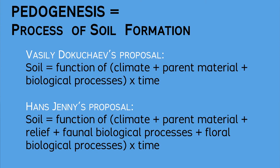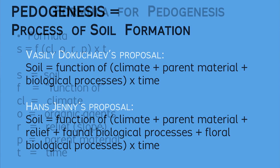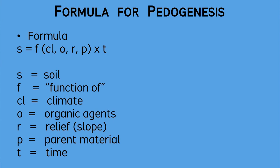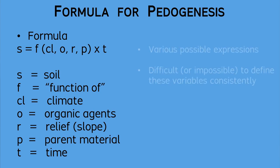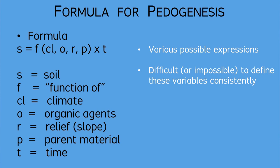Hans Jenny modified and expanded the pedogenesis formula. He added relief or slope of the terrain as a primary factor, and he distinguished the biological processes into separate categories of floral and faunal components. In this view, any particular soil is the result of the inputs of climate, organic agents, relief, and parent material over a period of time. A formula of pedogenesis could be expressed in different ways, but most importantly, we can be aware of the range of variables involved in soil formation.